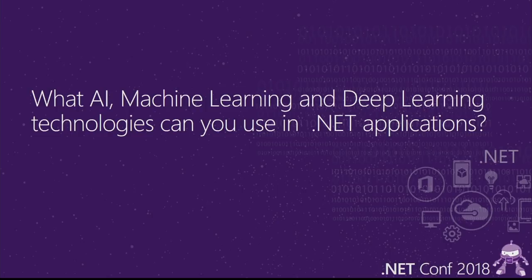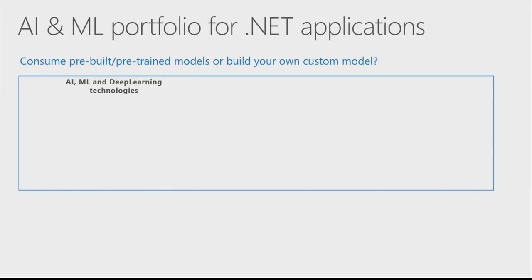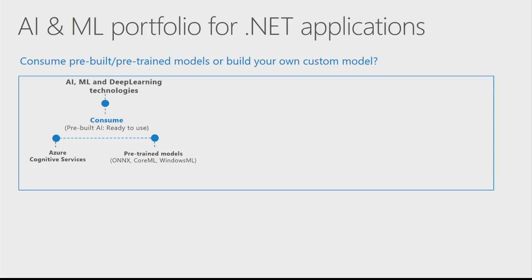Let's position the multiple technologies we have for AI. First, you could have technologies that you can just consume — like pre-built AI. For that, you could use Azure Cognitive Services or other pre-trained models like ONNX, which is a standard, or Core ML, or Windows ML in your program. Basically, you take a pre-trained model and just run it — scoring or predicting — and use it in your applications. You're infusing machine learning into your current applications.